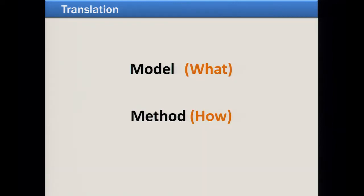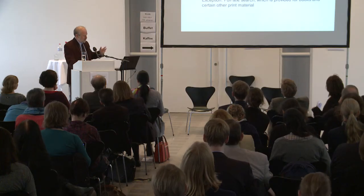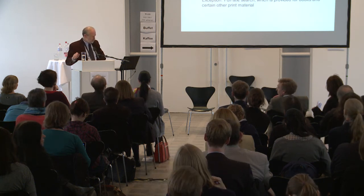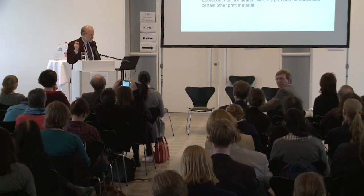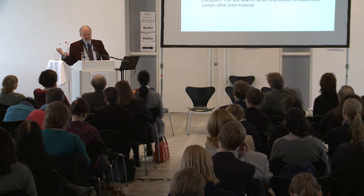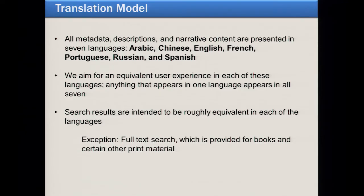Our translation model is straightforward: we do all metadata, descriptions, and narrative content in all seven languages, aiming for an equivalent user experience in each. Anything that appears in one language appears in all seven. This is a little different from Wikipedia, where an article in German can differ from one in French — that's fine, it's just not our approach. The only exception is full-text search within books, which is language-specific.